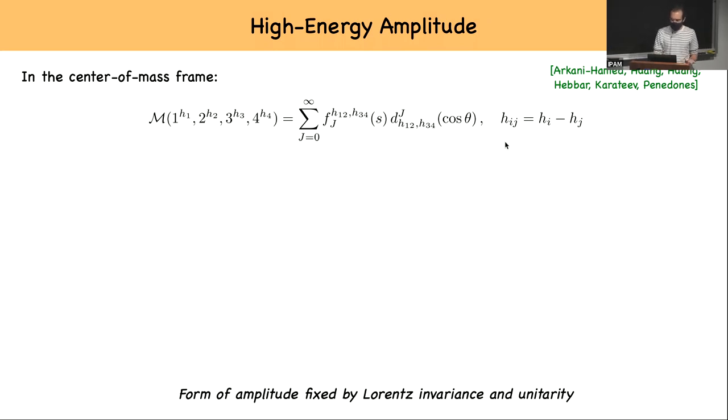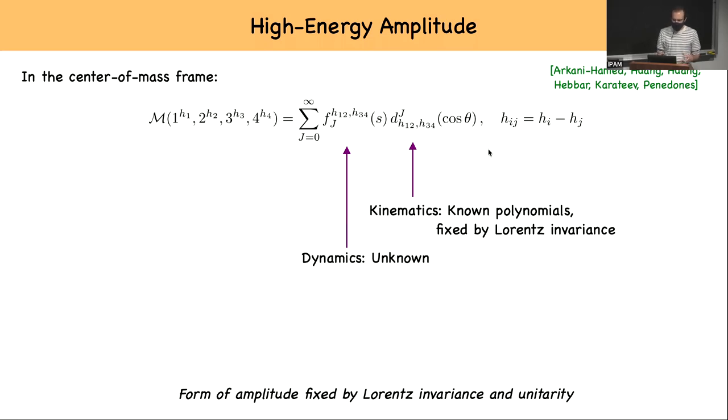So it turns out I can write my amplitude in this decomposition where I have a piece that is fixed by Lorentz invariance and, if you wish, captures the kinematics. These are polynomials that are known and are called the Wigner d-matrix. And then there is a piece that captures the dynamics and it's unknown—for example, it would take a specific value for string theory or some other value if you look at something else. Now I don't know this piece, but what I know is that if I choose the so-called elastic scattering—namely I take the difference of the helicities from incoming and outgoing particles to be the same—then the imaginary part of this f, also called the spectral density, is non-negative.